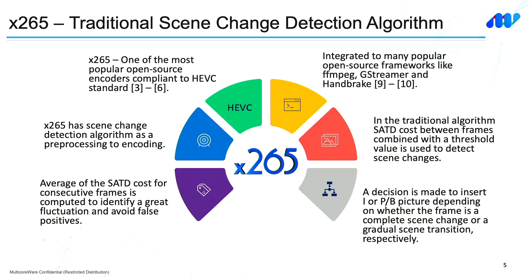X265 is one of the most commonly used HEVC-compliant encoders, integrated into many popular frameworks like FFmpeg, GStreamer, and Handbrake. In X265, the scene change detection algorithm is implemented during the slice type decision module. Here, we compute the SATD cost — sum of absolute transform difference — between frames and use a threshold value to detect if there is a scene change. We compute the average SATD cost of consecutive frames to differentiate abrupt cuts from transitions, and accordingly insert I-frames for scene cuts or P and B pictures during transitions to increase overall compression efficiency.